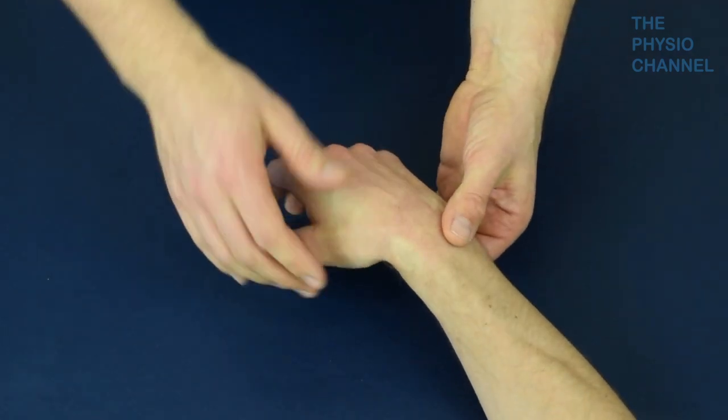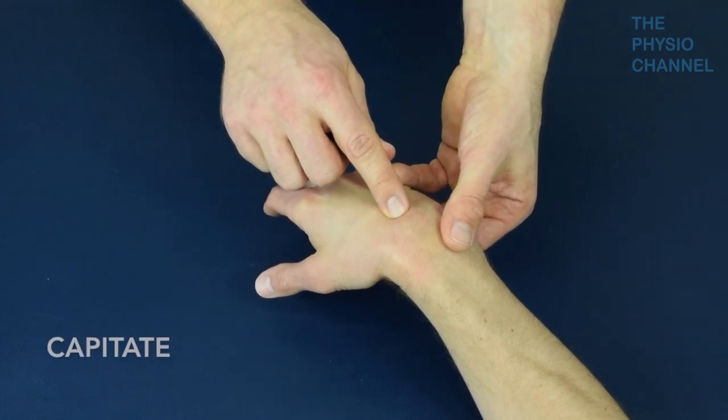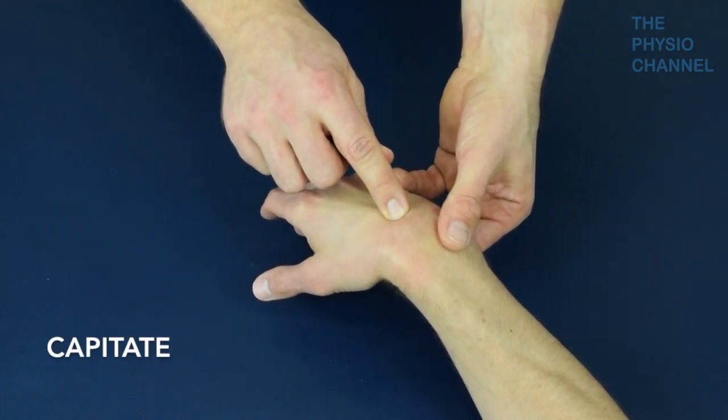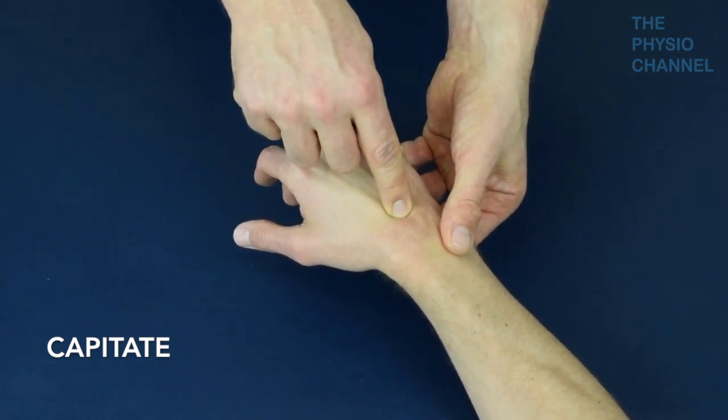The capitate can be located at the dip at the base of the third metacarpal when the wrist is flexed. You can feel the capitate if you push into this dip when the wrist is in neutral.